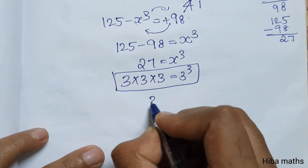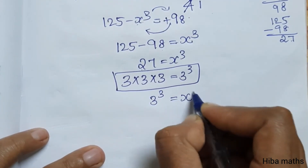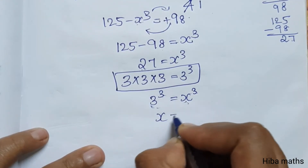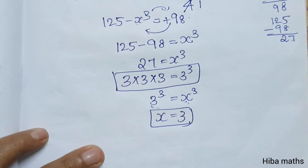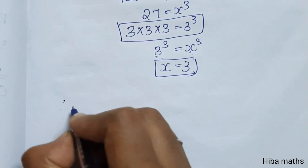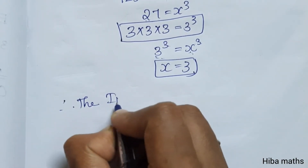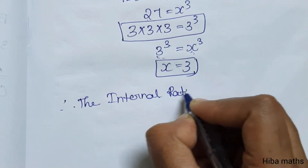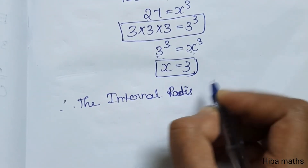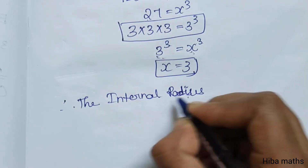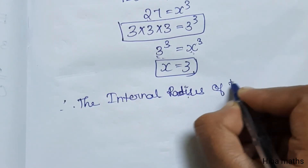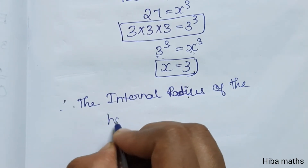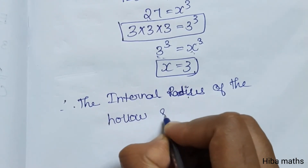Since x³ equals 3³, comparing the powers and bases we get x equals 3. Therefore the internal radius of the hollow sphere is 3 centimeters.